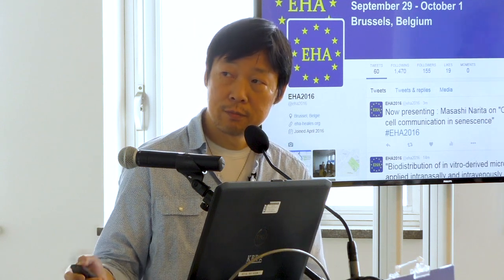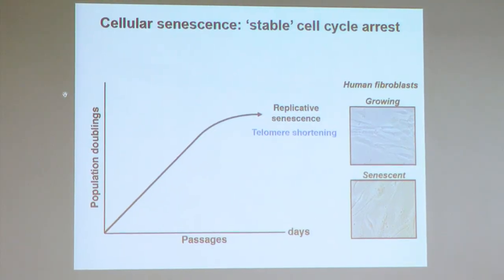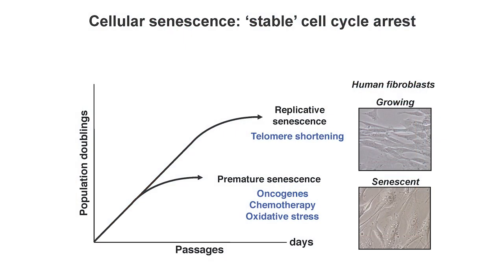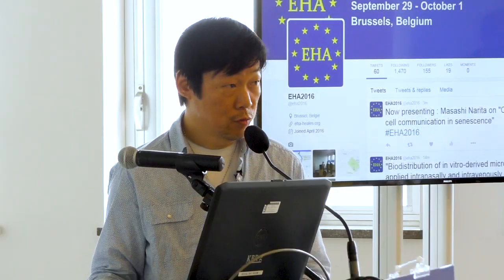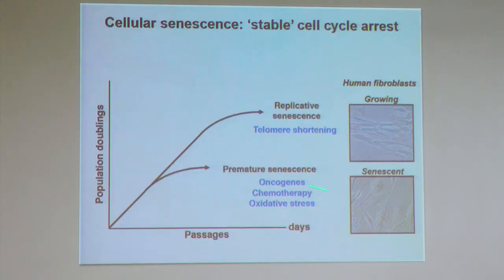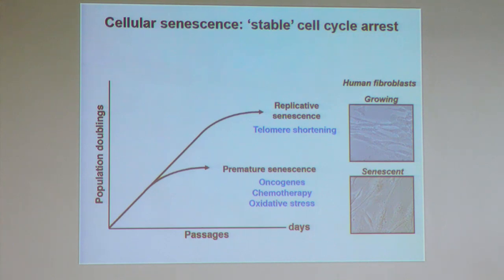A similar phenotype can be achieved by a number of different types of stimuli and stress: oncogenic stress, which is our interest, and chemotherapy, DNA damage, or oxidative stress. This telomere shortening turns out to be a DNA damage signal-induced senescence. So there are a number of diverse stimuli that can induce senescence, similar to apoptosis — many things can induce a similar phenotype.